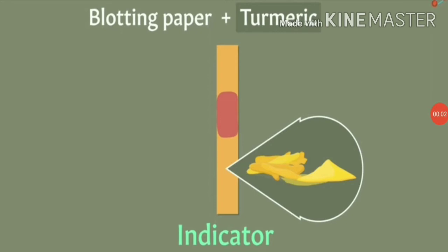Now let's talk about turmeric, another natural indicator. Turmeric is also used as a natural indicator and it is of yellow color. To make turmeric paper strips, we need a blotting paper or filter paper plus a paste of turmeric — water and turmeric powder. We apply that paste to blotting paper, dry it, and after drying we cut it into thin pieces to use as turmeric paper for testing acidic or basic solutions.